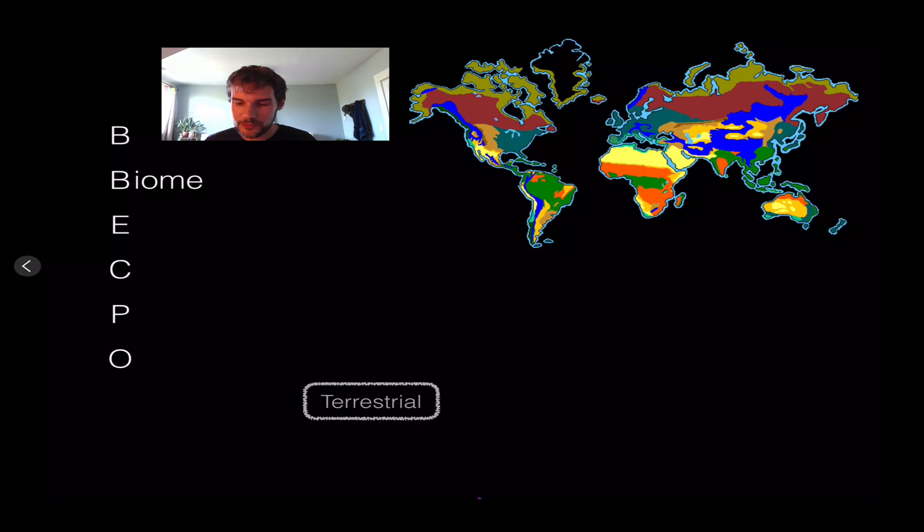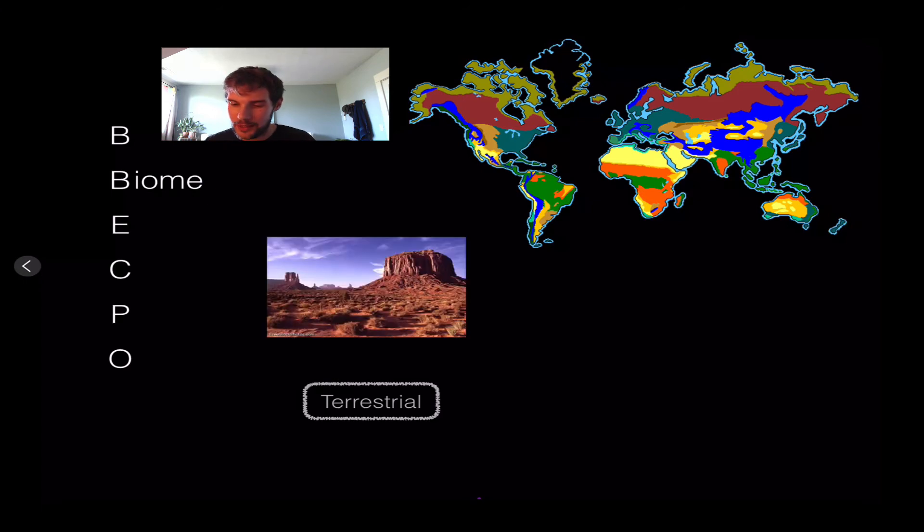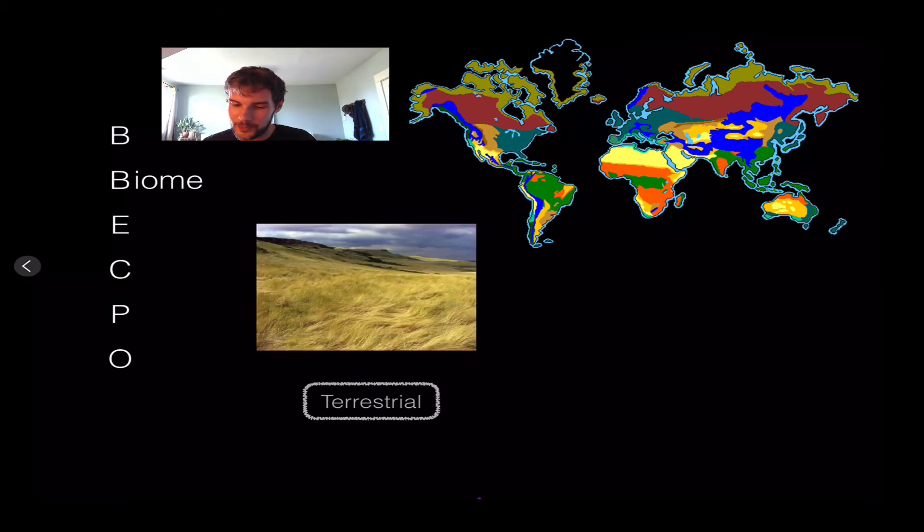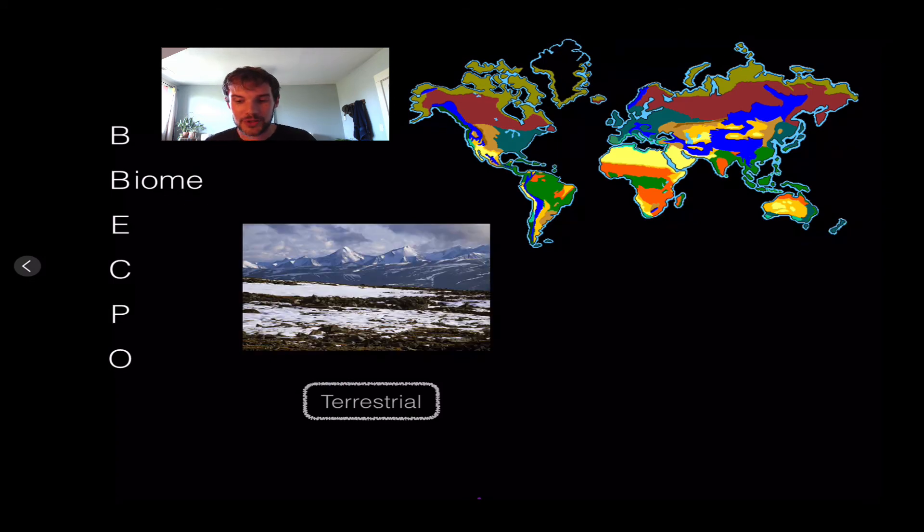Biomes - there are multiple different types, and terrestrial ones follow latitude lines across the Earth. The first is deserts, found in the US, Asia, and Africa. We have grasslands with grass and grazing animals. Tundra is in northern or southern regions and usually has snow all the time.